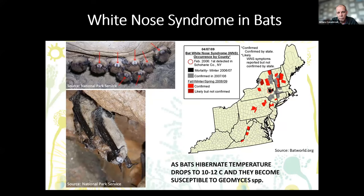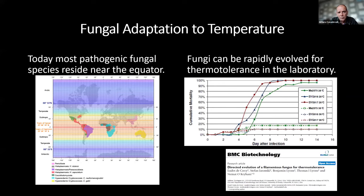White-nose syndrome in bats gives remarkable evidence for the importance of temperature. Bats in the United States have been coming down with this disease since 2006. Bats are resistant in the summer when their temperature is 37, but in the winter when their temperature drops to 10 to 12 degrees, they can be killed by this fungus. If you take the infected bats into the laboratory, feed them and let the temperature come up, they can clear the infection. Today most pathogenic fungi reside near the equator, but fungi can rapidly evolve to higher temperatures — demonstrated by a company that trained a fungus over a few months to grow at 37 degrees.